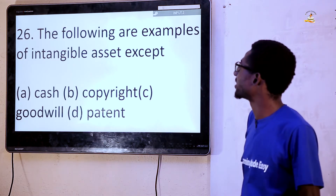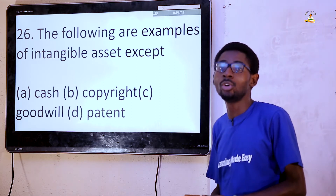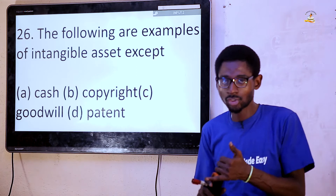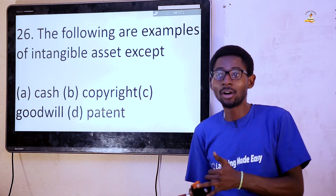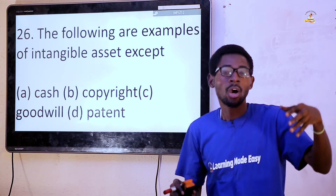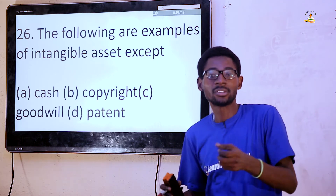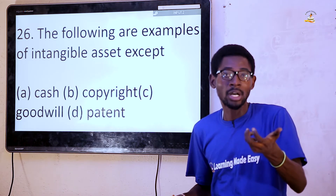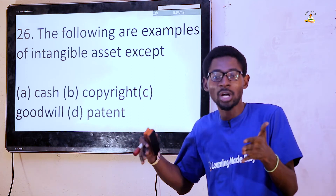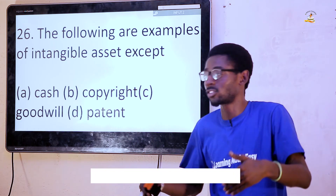Question 26: The following are examples of intangible assets, except — Intangible assets are assets that cannot be touched or held, but have an effect on the profit and loss of the organization. So there are some assets you cannot see or touch, but you can feel their effect on the profit of the organization.